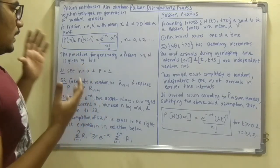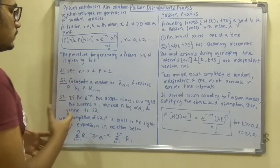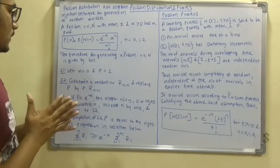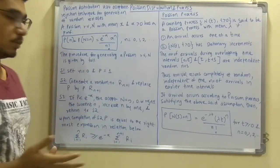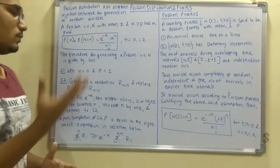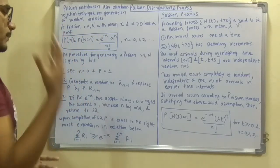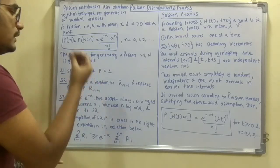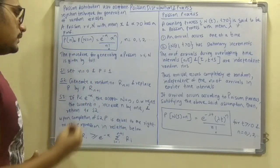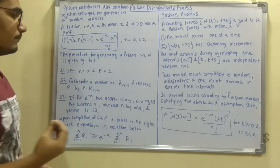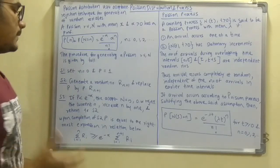For generating the Poisson process, you follow this sequence of steps. First, set N = 0 and P = 1. The N value is used in calculating the probability, and you keep the probability P as 1. Next, generate a random number R_(n+1) and replace the probability P by P multiplied by R_(n+1).